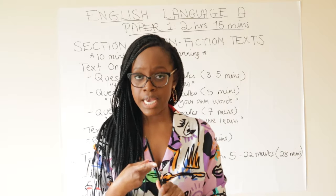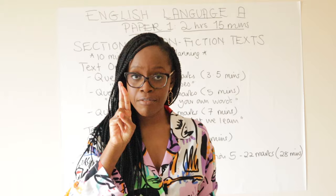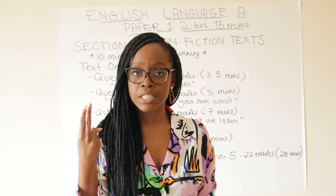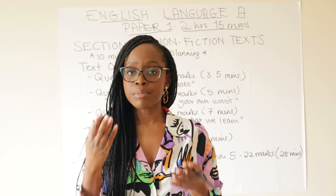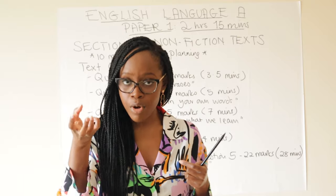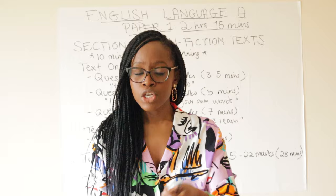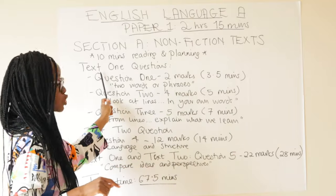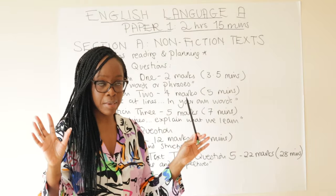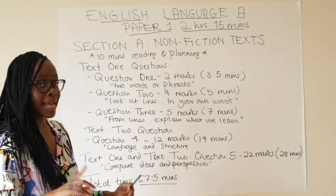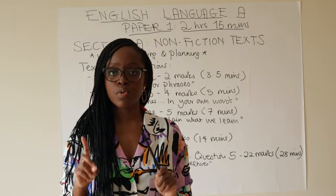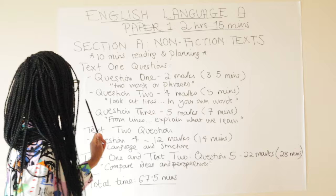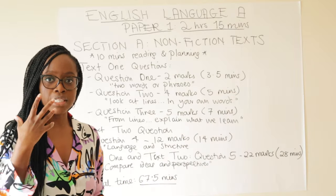Section A is the non-fiction text section. You'll be given an unseen text — the first text you receive — and some questions will ask you to look at the seen Edexcel anthology text, which you've already studied. Some questions relate to the seen text, others to the unseen extract. Questions one, two, and three in Section A are solely related to that unseen text.